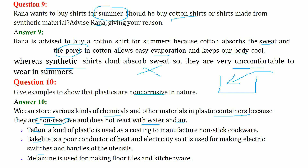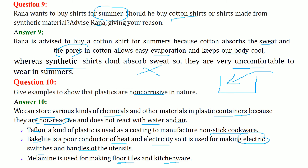Teflon is a kind of plastic used as a coating to manufacture non-stick cookware. Bakelite is a poor conductor of heat and electricity and is used to make electrical switches and handles of utensils. Melamine is used to make floor tiles and kitchenware.